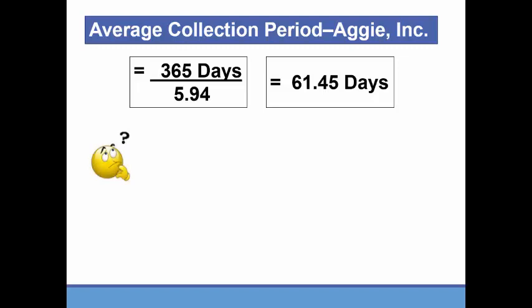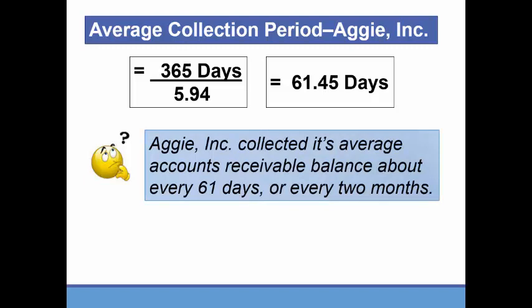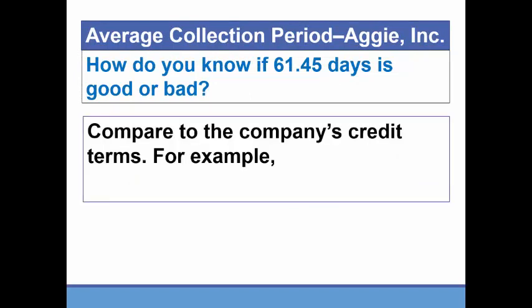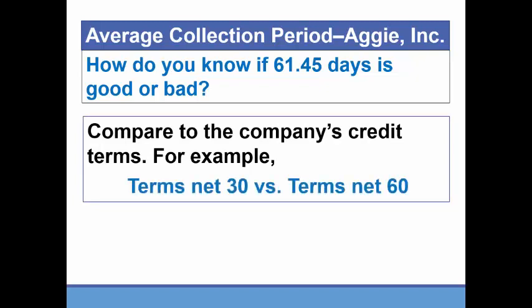So what does this tell managers? It collected its average accounts receivable balance about every 61 days, or roughly every two months. How do we know if this is good or bad? It depends largely on the credit terms. If the terms were net 30, collecting every 61 days is not very good. But if the terms were net 60 — meaning pay us in 60 days — then 61.45 days is pretty good; we're sticking to our policy.